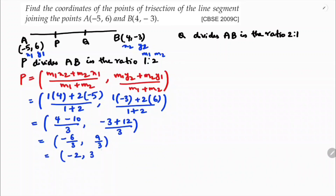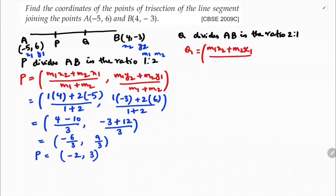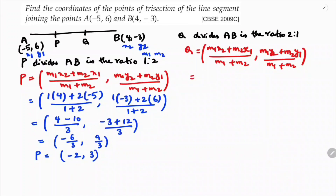So the value of P is (-2, 3), since -6/3 = -2 and 9/3 = 3. Now I need to find Q. Writing the section formula again: Q = (M1·x2 + M2·x1) / (M1 + M2), (M1·y2 + M2·y1) / (M1 + M2).